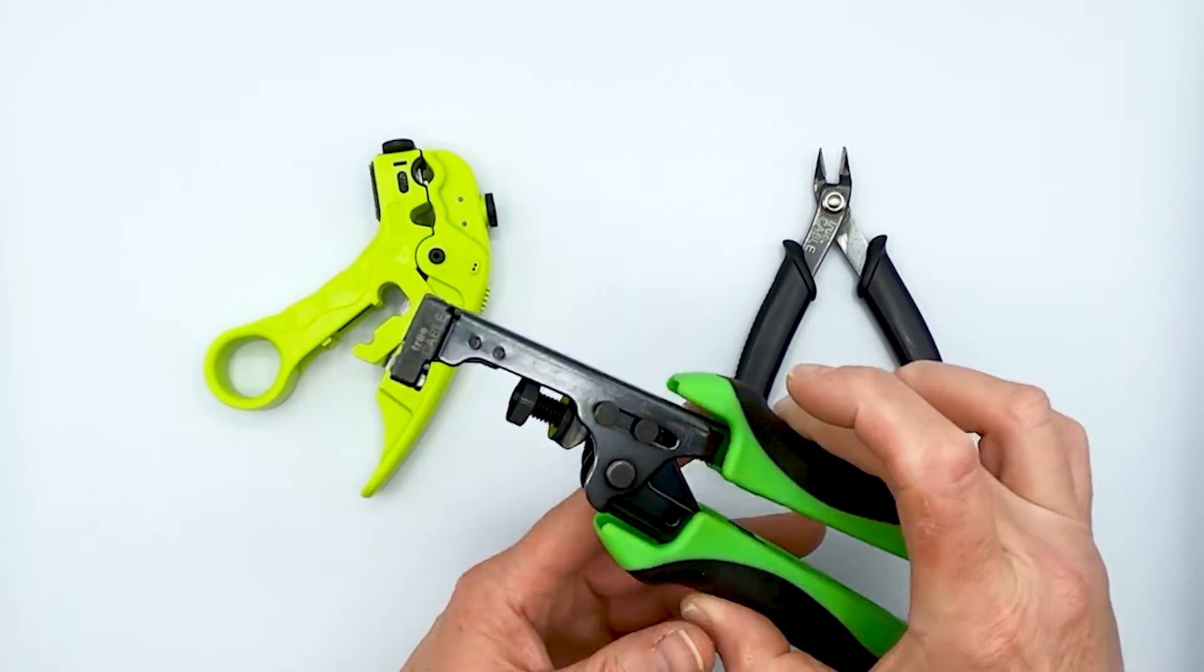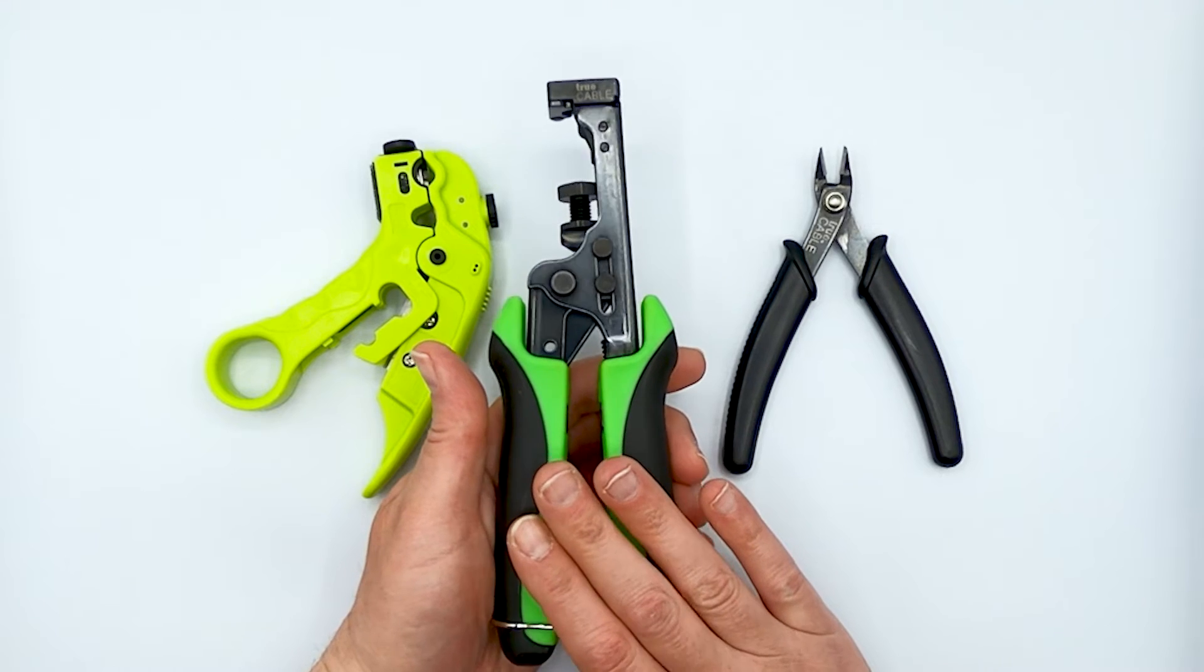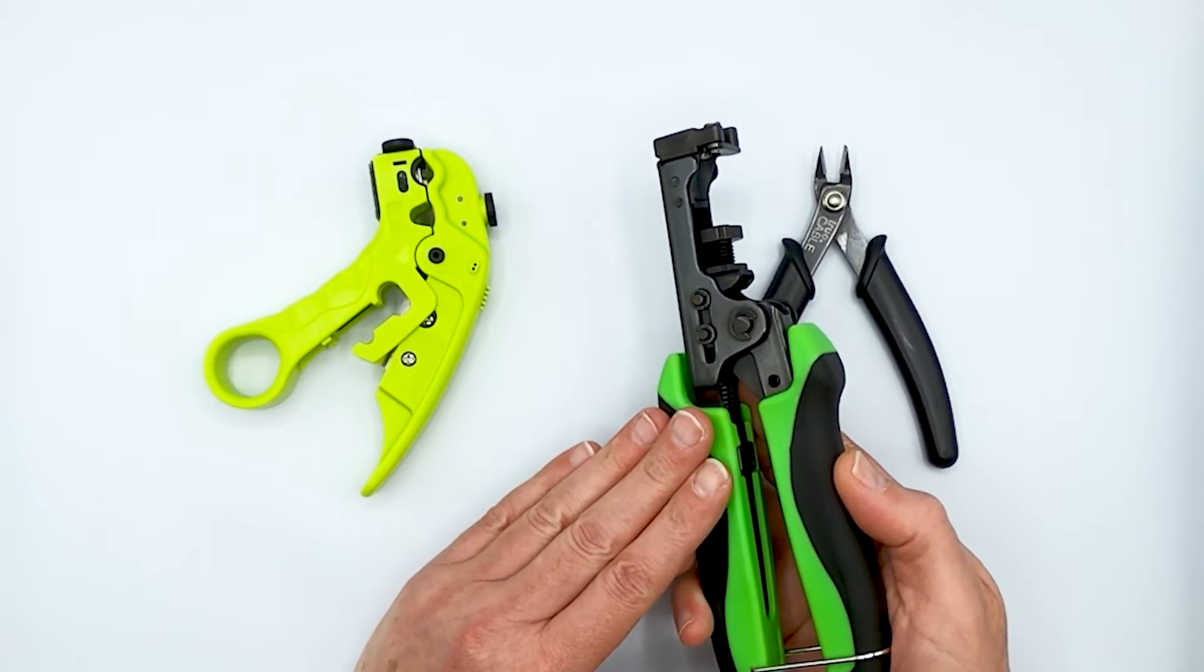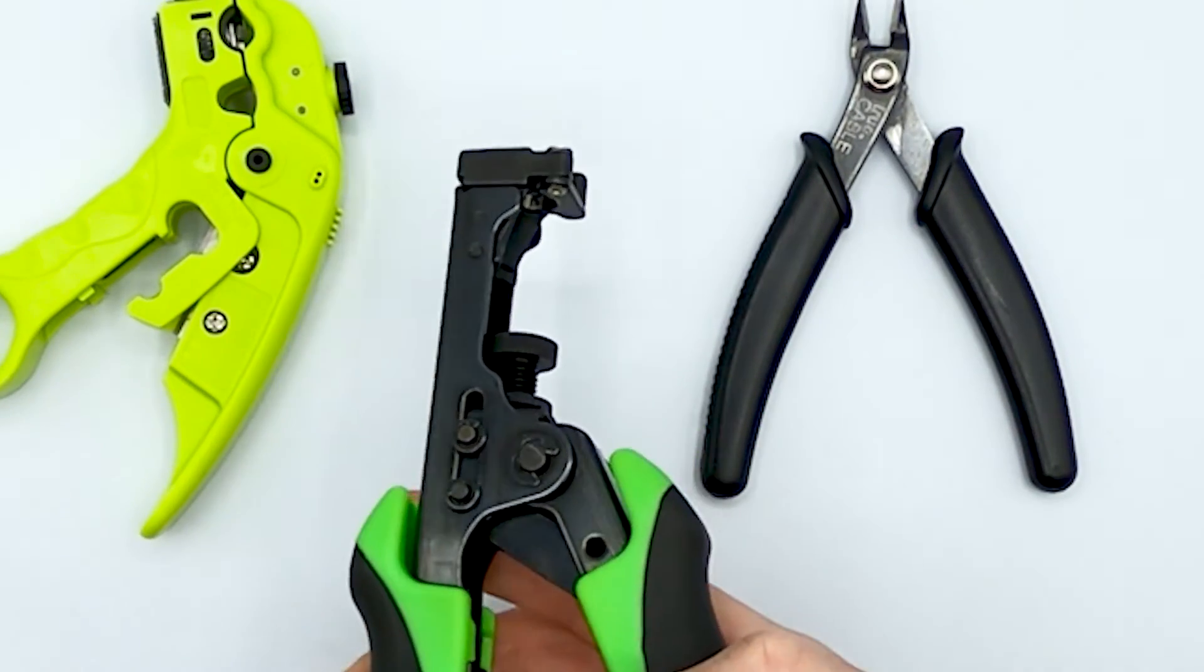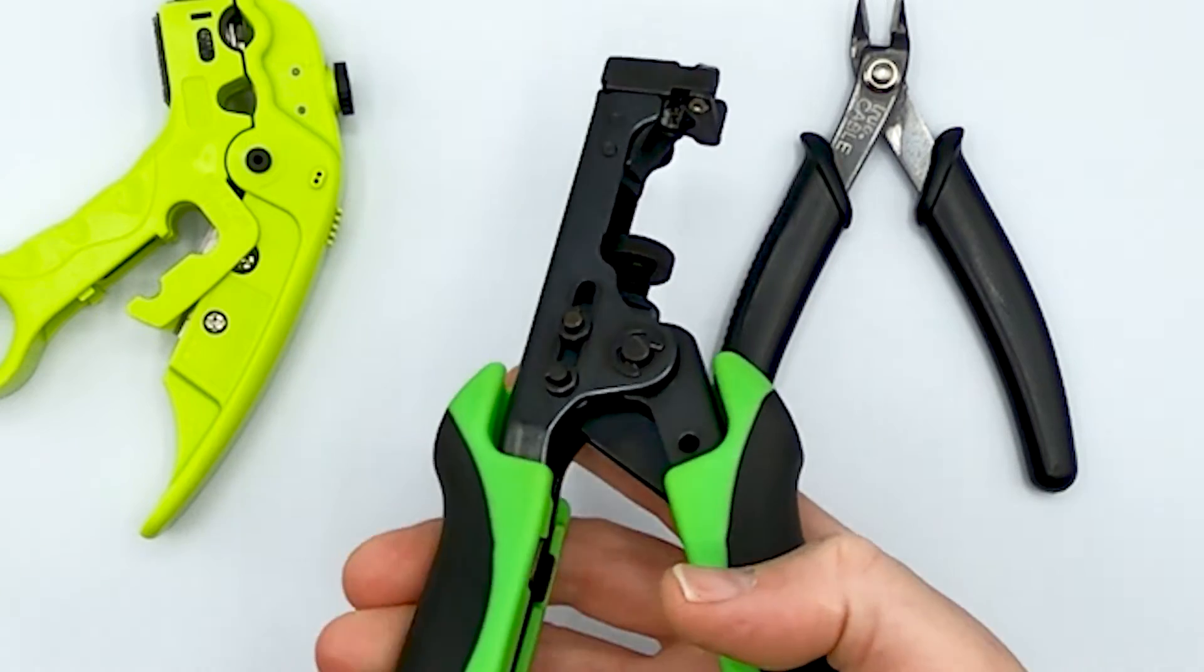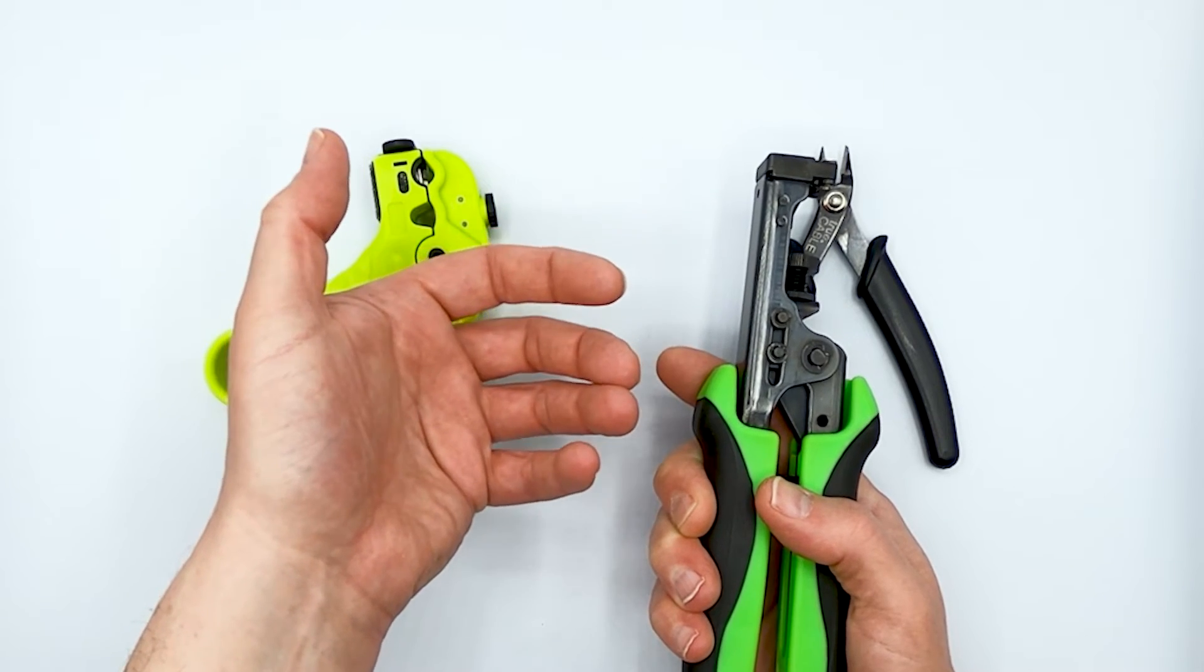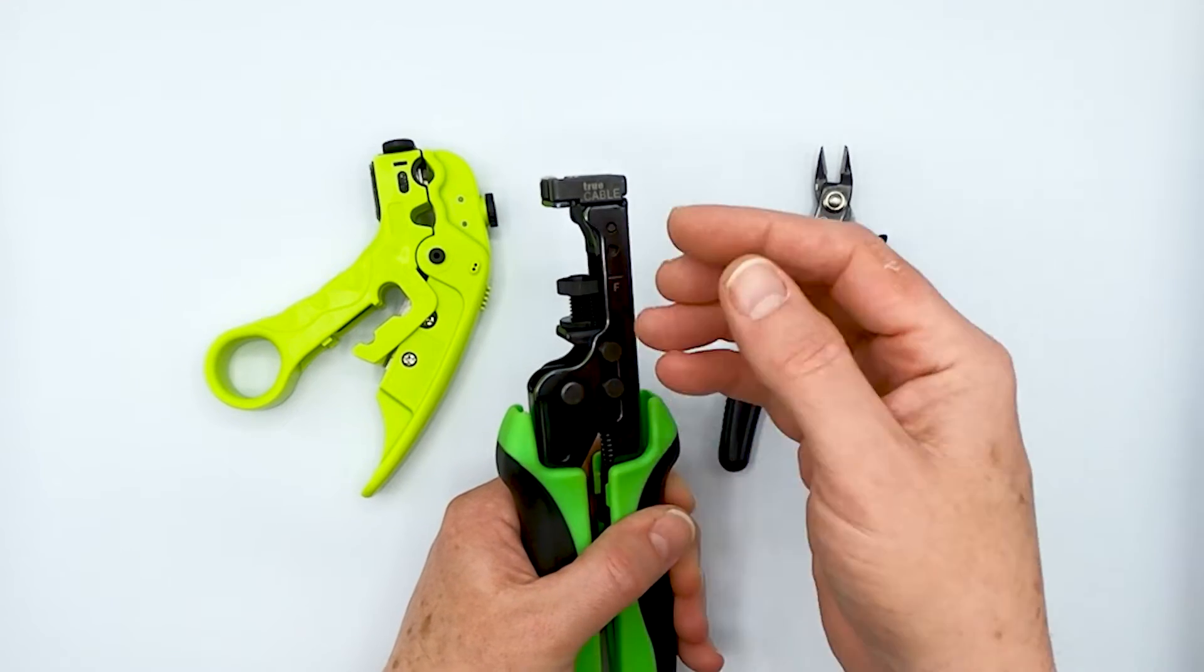And that is our RG6 compression tool. And this works strictly for RG6 cable with F compression connectors. This particular tool is going to last you a lifetime. So it's not something that's going to break. It's designed in such a way that it gives a direct shot with this lever mechanism. It's basically an inline compression technology, which differs from the squeeze compression technology that you see on the more compact crimpers.